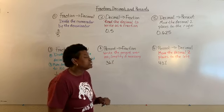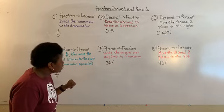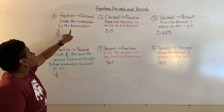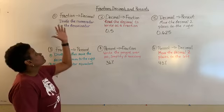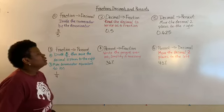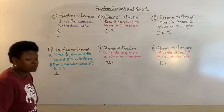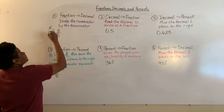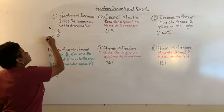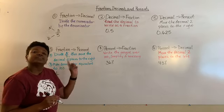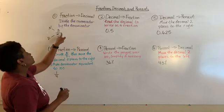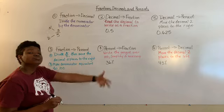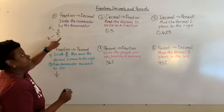To convert a fraction to a decimal, you divide the numerator by the denominator. The number on top is the numerator, the number on the bottom is the denominator. The fraction bar is also an operation — it means to divide. So three-fifths is read as three divided by five.